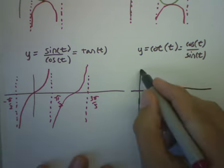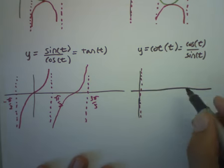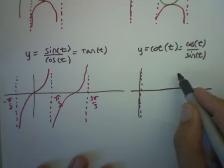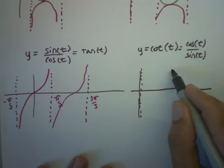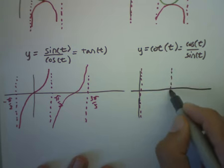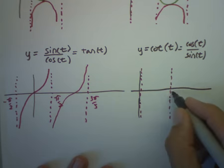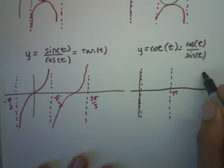And so cotangent has asymptotes everywhere the sine is zero. Sine is zero at zero, so there's an asymptote here. And sine is zero, the next place that happens is at π, and the next place that happens is at 2π.